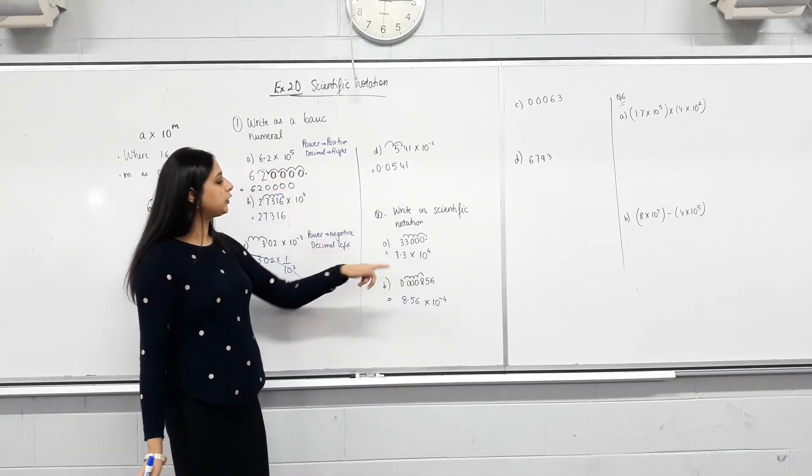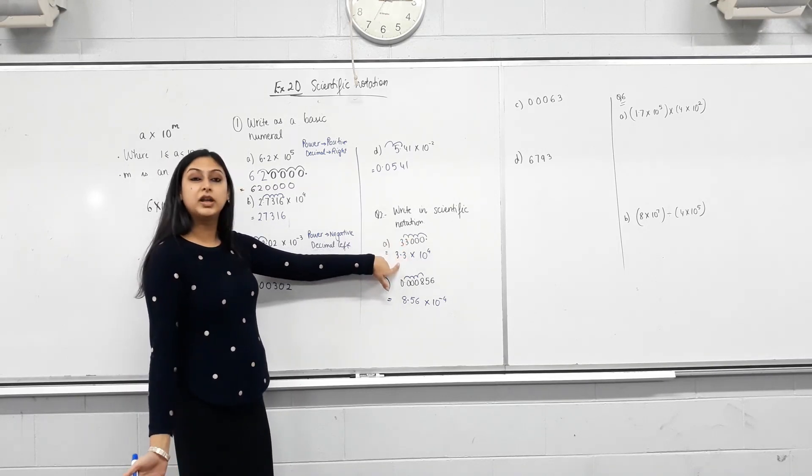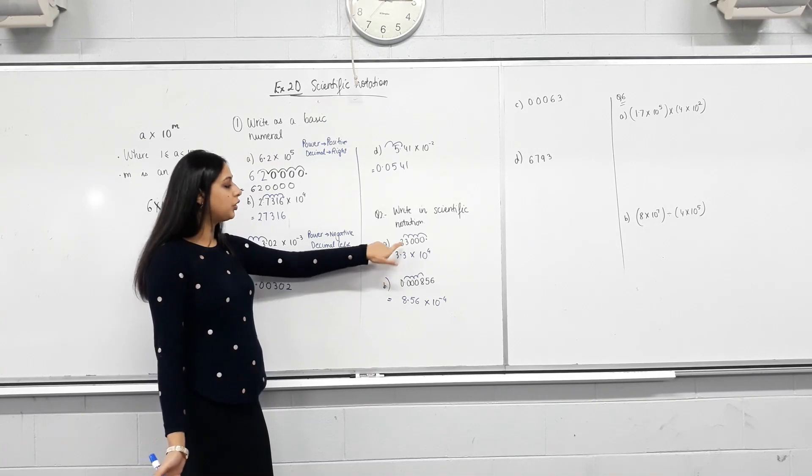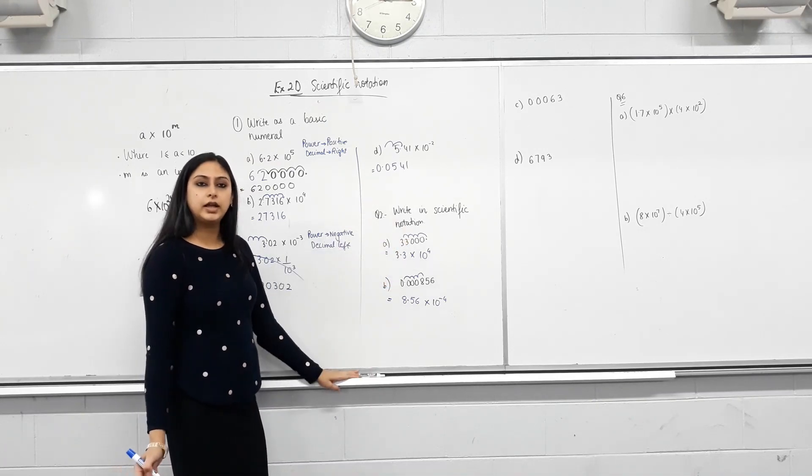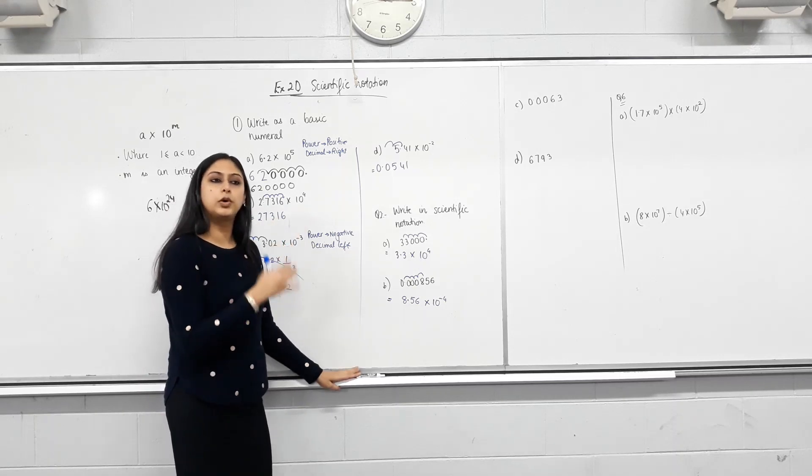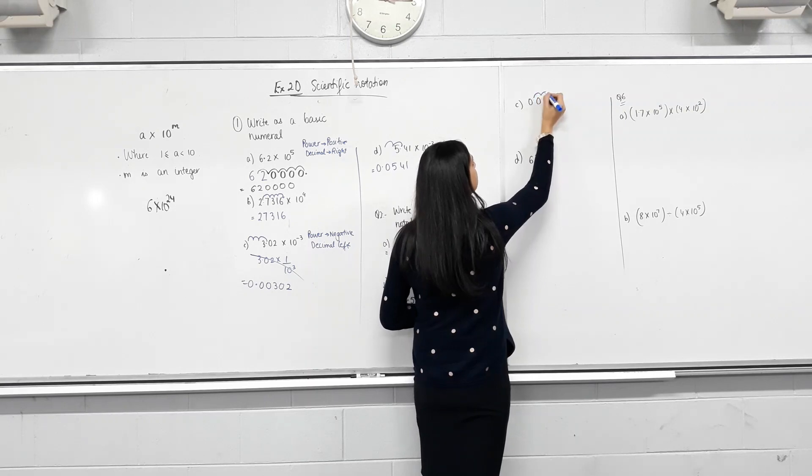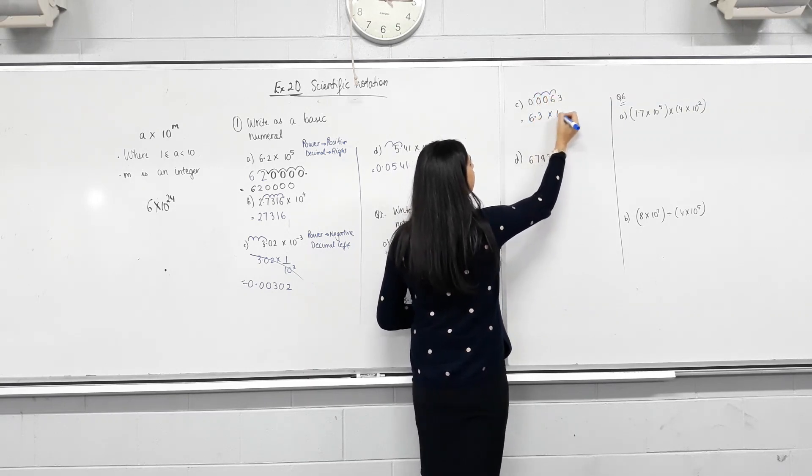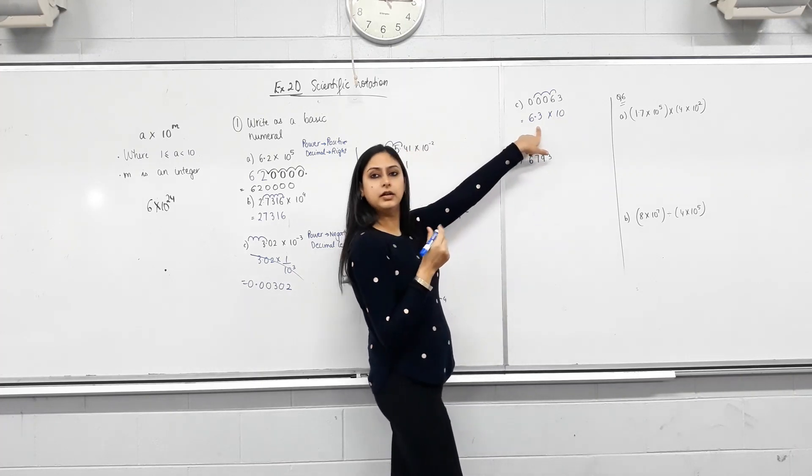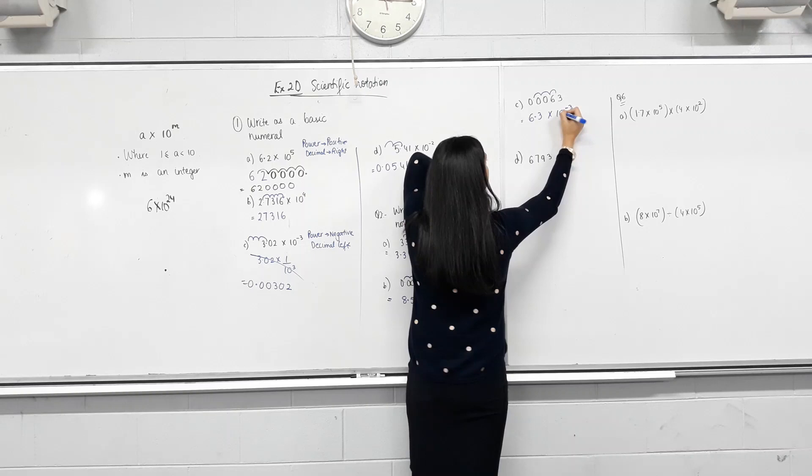So the thing with scientific notation is, you need to have a number here that is between 1 and 10. So first non-zero digit in your question. Move the decimal after that, and then see whether you're making it smaller or bigger. Let's try this one. So to move the decimal here, one, two, three places. So I'll write it as 6.3. But haven't I made it bigger? But I can't. So to compensate for that, I'll times it by negative 3.